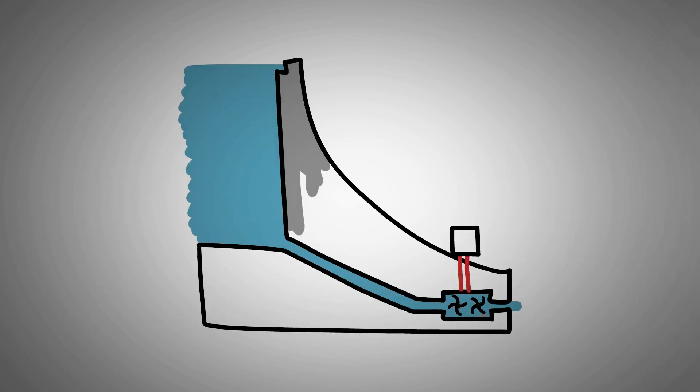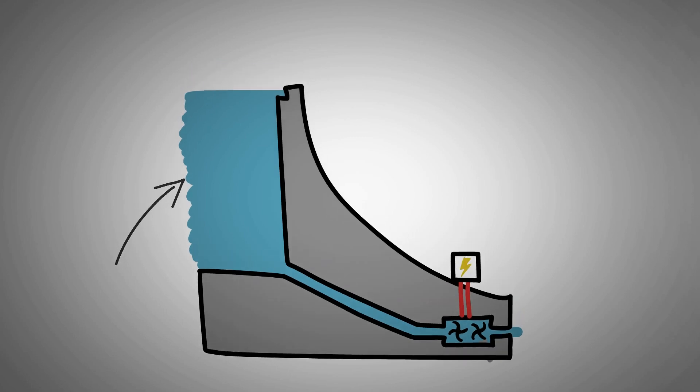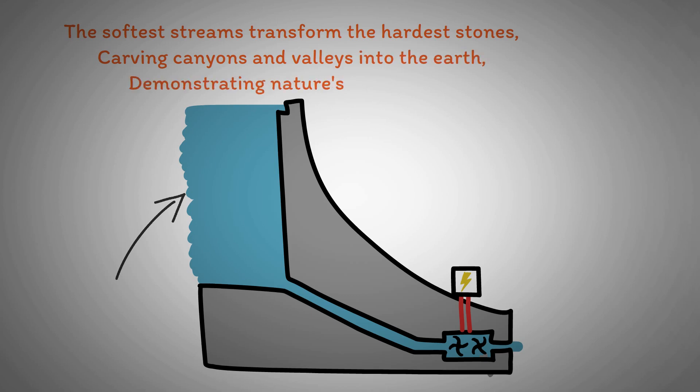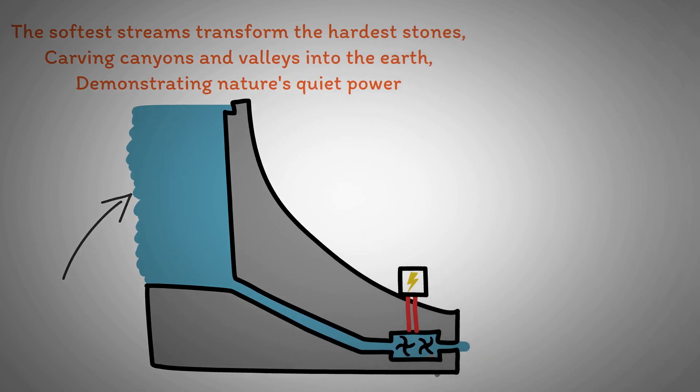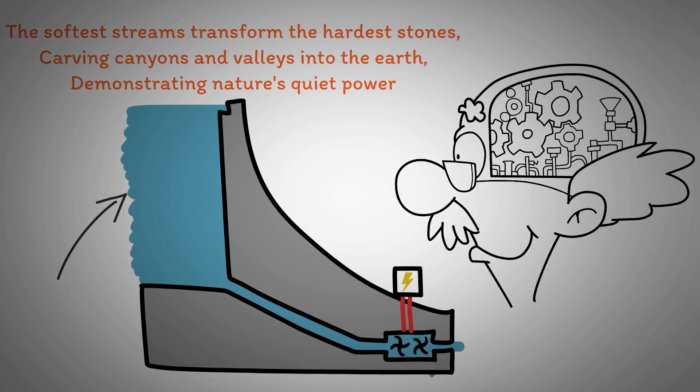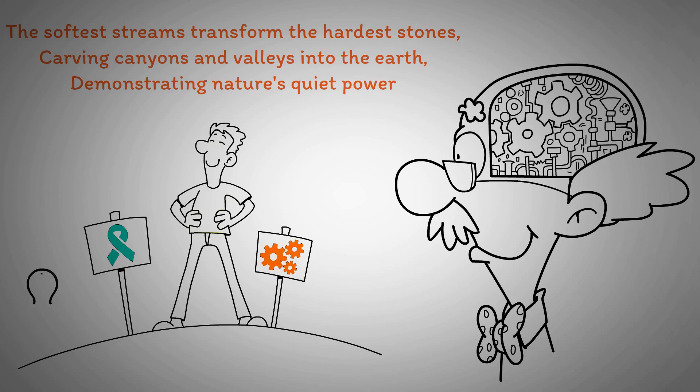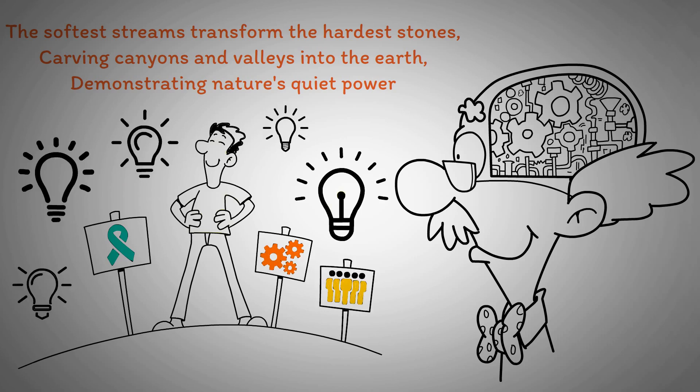Now, consider how water shapes the landscape through persistence and gentle pressure, not through force. Over centuries, the softest streams transform the hardest stones, carving canyons and valleys into the earth, demonstrating nature's quiet power. Your brain responds similarly to the consistent, gentle pressure of positive change. Just as water doesn't erode rock with brute force, but with persistent flow, positive changes in your life don't need to be monumental to be effective. Small, steady actions can reshape your mental landscape over time, carving out new paths of thought and behavior that lead to the summit of your personal growth.